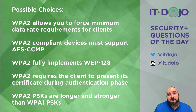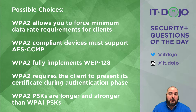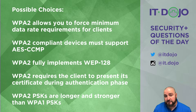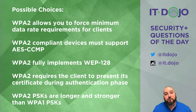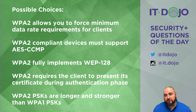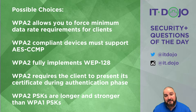Item number one says WPA2 allows you to enforce minimum data rate requirements on your clients — no. Different radio technologies allow you to do this. For an 802.11g radio, for example, you could specify a minimum data rate of 12 megabits per second, which would prevent 802.11b radios from connecting. But this has nothing to do with WPA2 or WPA1 — it's a function of the radio standards: 802.11g, 802.11n, 802.11ac, etc.